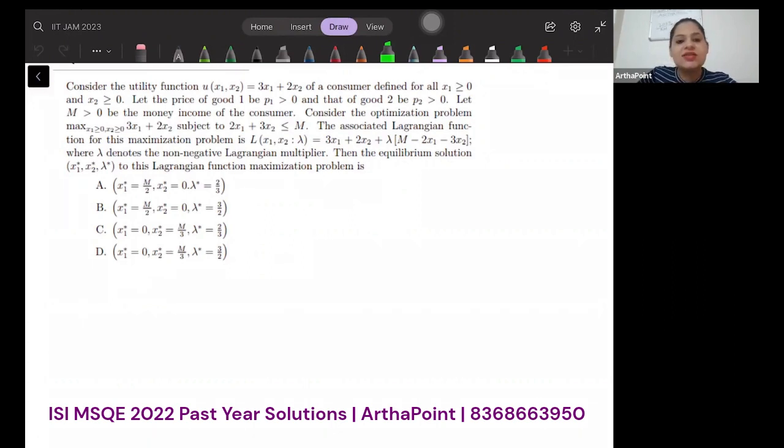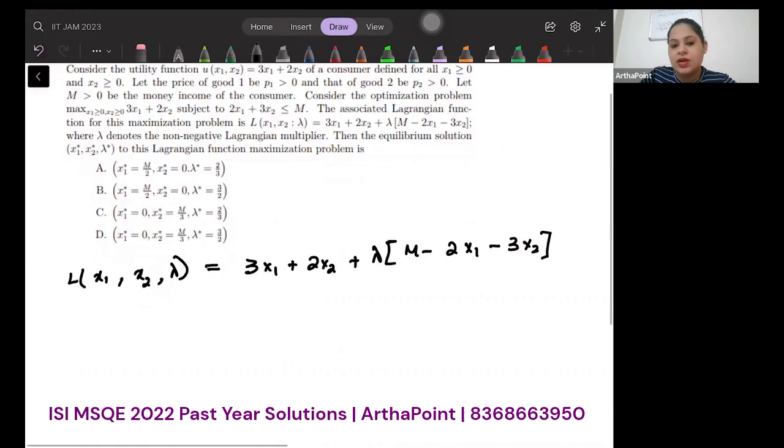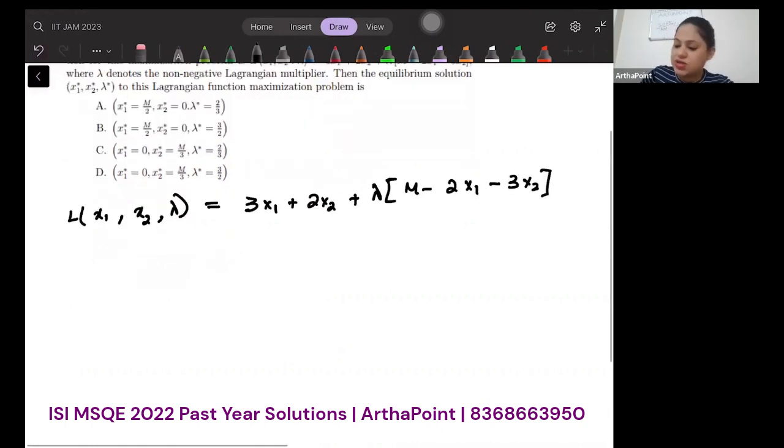And they are asking you to maximize it using the method of Lagrange. Let me show you what mistake you could have made. If you formulate a Lagrange like this: 3x1 plus 2x2 plus lambda(m minus 2x1 minus 3x2). Suppose this is what is given to me.